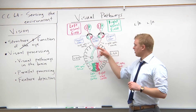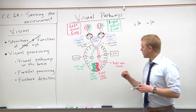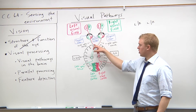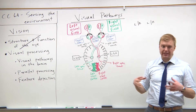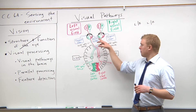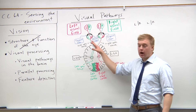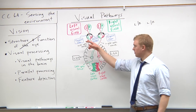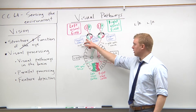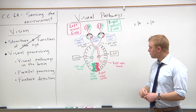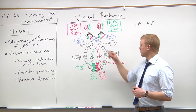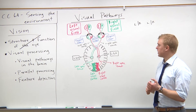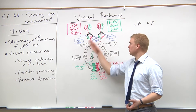We have our right and left optic nerves. The nasal fibers are going to cross at a place called the optic chiasm, but the temporal fibers will not. Everything on the left side of the retina will be processed at the left visual cortex, and similarly the right side of the retina will be processed at the right visual cortex — from the temporal sides.